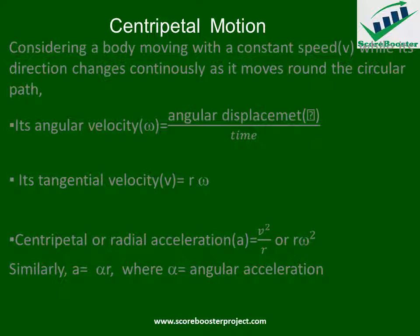The centripetal or radial acceleration a is given as phi squared over r, or r omega squared, where a is the centripetal acceleration, phi is the tangential velocity, and r is the radius in meters. Similarly, we can also express centripetal acceleration a as alpha times r, where alpha is angular acceleration and r is the radius.